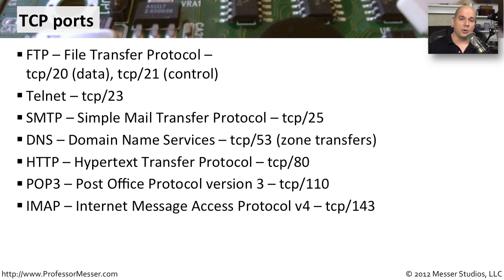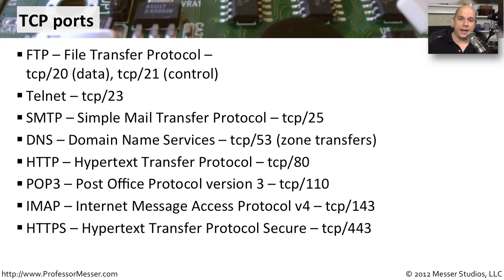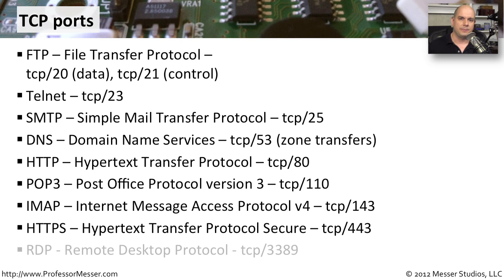IMAP — Internet Message Access Protocol version 4 — is a more modern mail client protocol that commonly uses TCP port 143. Secure web servers run HTTPS — Hypertext Transfer Protocol Secure — which sends an encrypted web page to your client so nobody can see what's being transferred, and it commonly uses TCP port 443. The last TCP protocol we'll look at is Remote Desktop — in the Microsoft world, the Remote Desktop Protocol uses TCP port 3389.